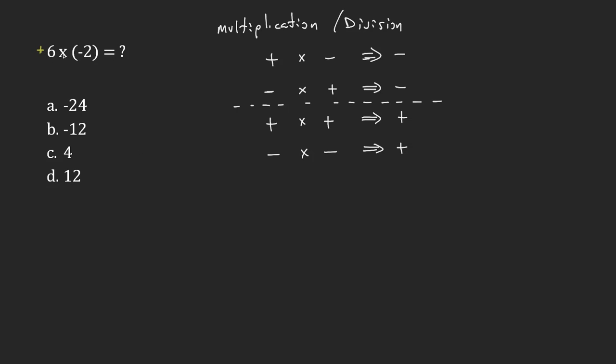So here we have positive 6 times negative 2. Positive times a negative gives me a negative result. So I really just have to do 6 times 2, which is 12. And because I'm dealing with these different signs—negative 2—it becomes negative 12 because of this rule. So the answer is b, negative 12.